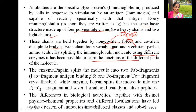The enzyme papain splits the molecule into two FAB fragments — fragment antigen binding — and one FC, that is fragment crystallizable. The enzyme pepsin splits the molecule into fragment antigen binding sites and seven small, usually inactive peptides. Differences in biological activities have led to the division of antibodies into different classes and subclasses.